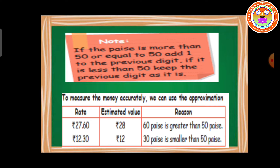Students, here are two examples. The first value is 27 rupees 60 paise. So 60 paise is greater than 50 paise, so we have to add plus 1 to the previous digit. The previous digit here is the rupee value. So 27 rupees plus 1 becomes 28 rupees. The estimated value for 27 rupees 60 paise is equal to 28 rupees.